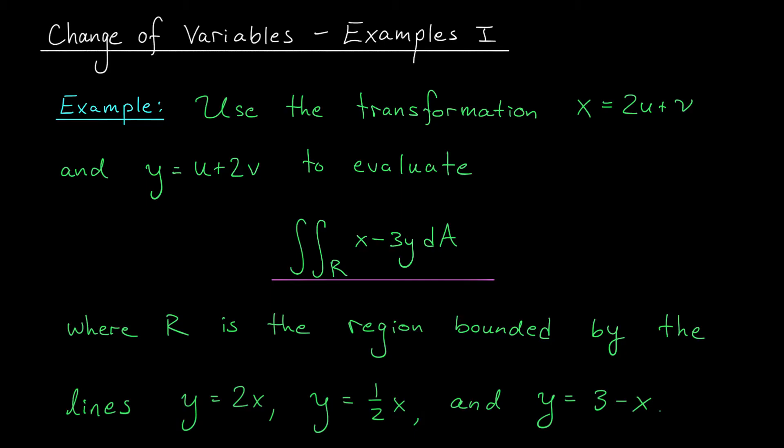Here we're going to use the given transformation x = 2u + v and y = u + 2v to evaluate a double integral. We're integrating over the region R bounded between the lines y = 2x, y = 1/2 x, and y = 3 - x.